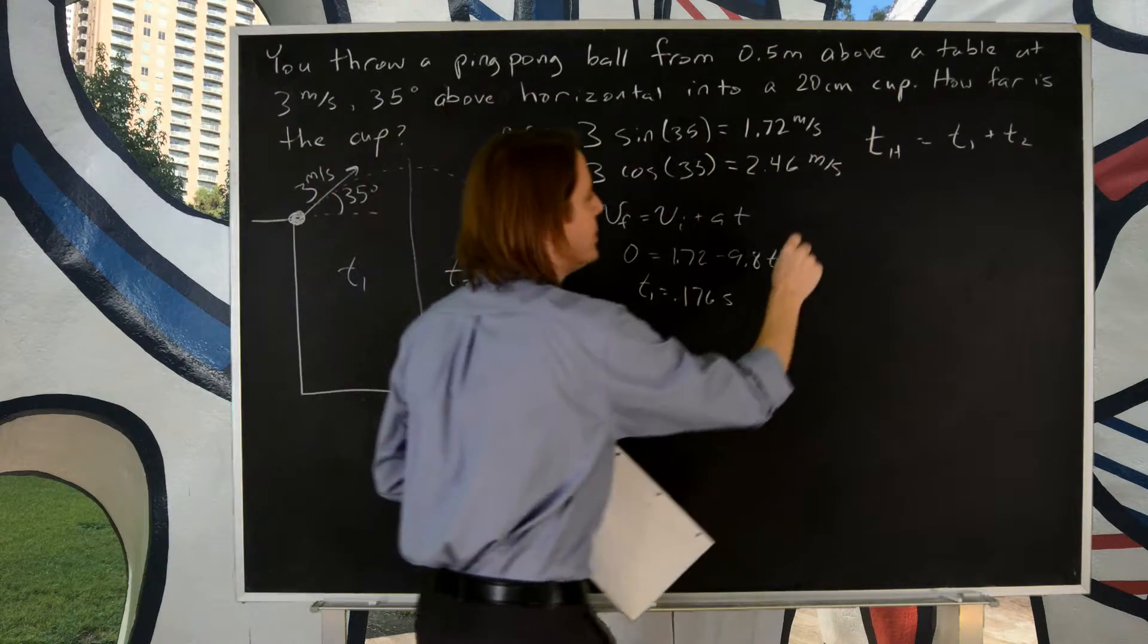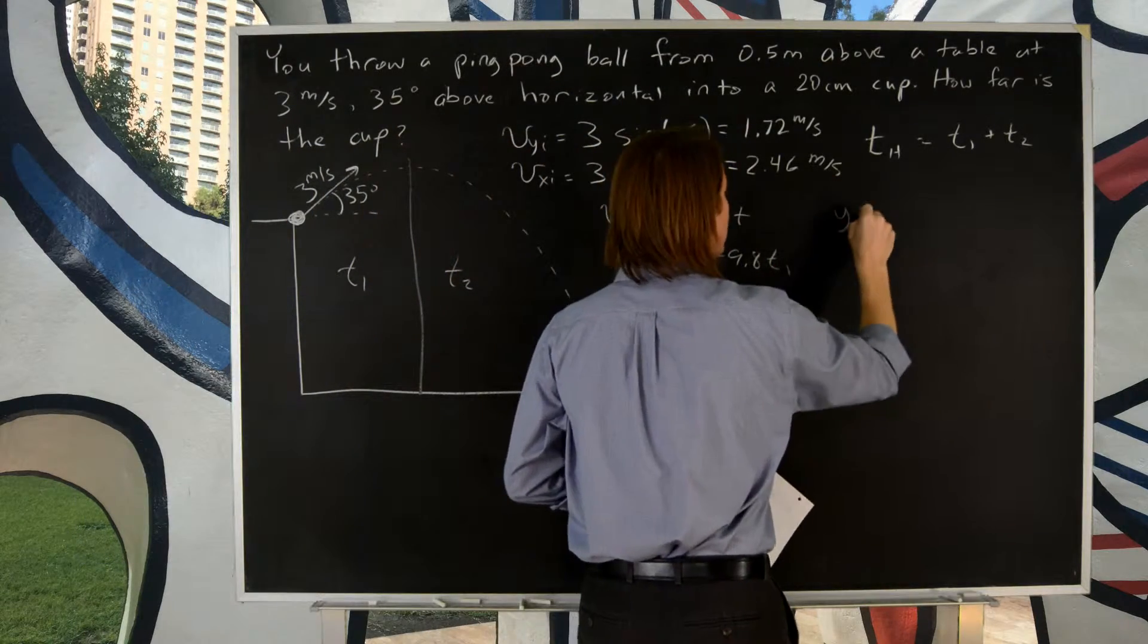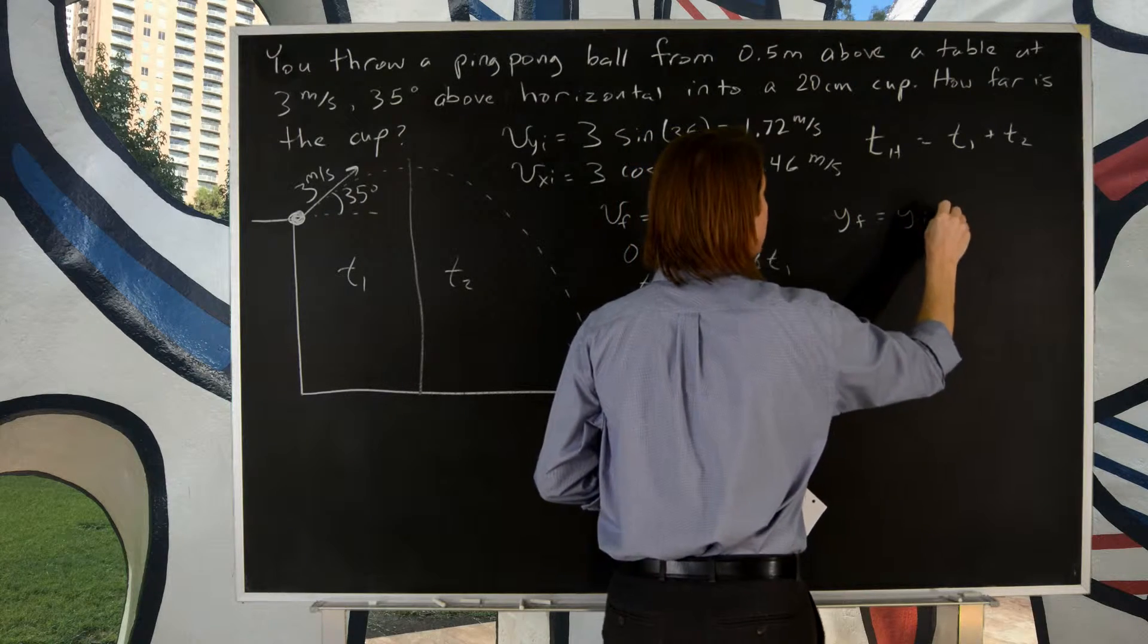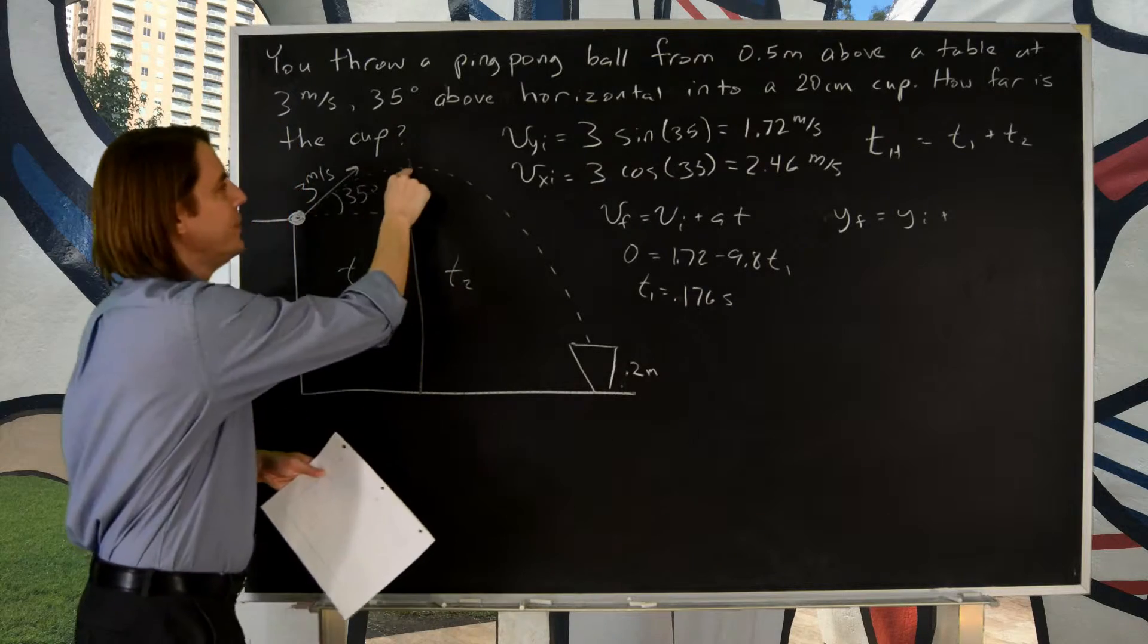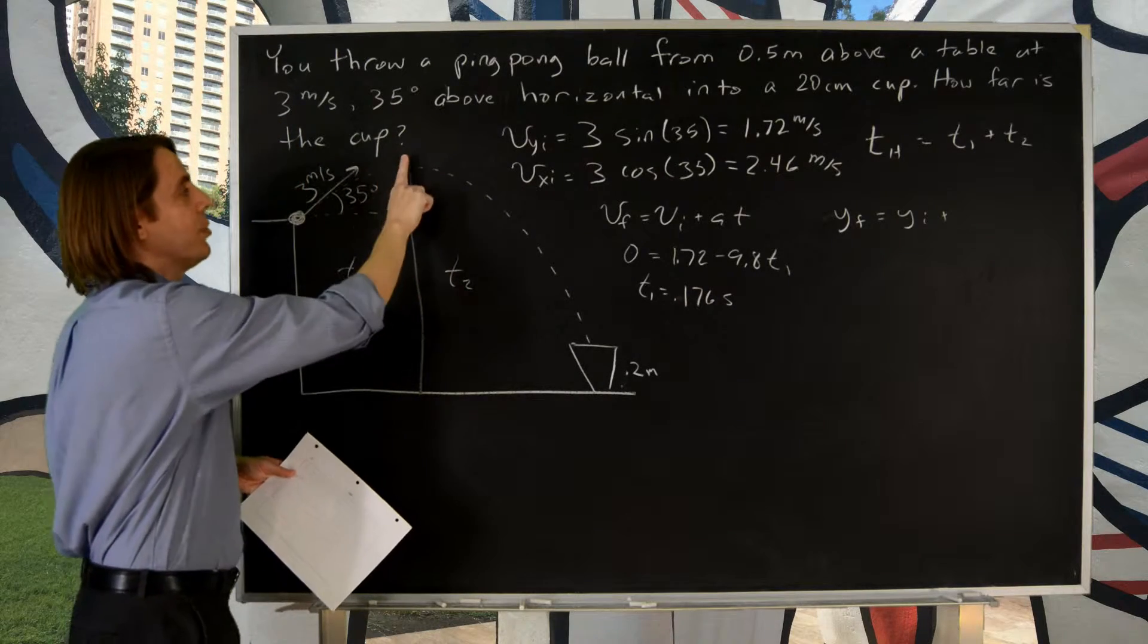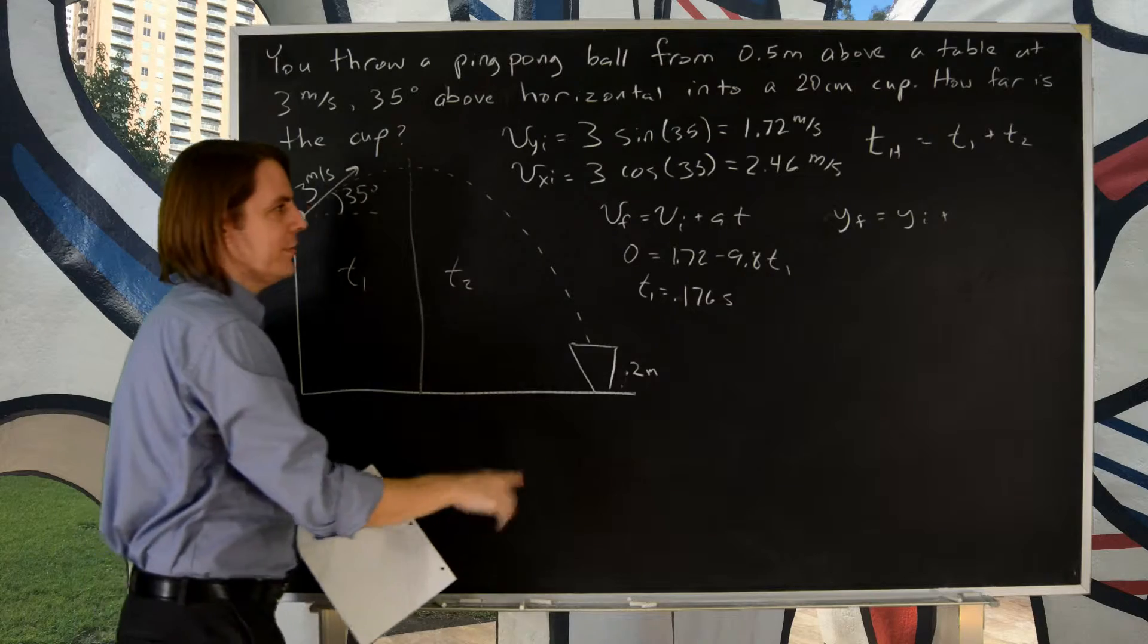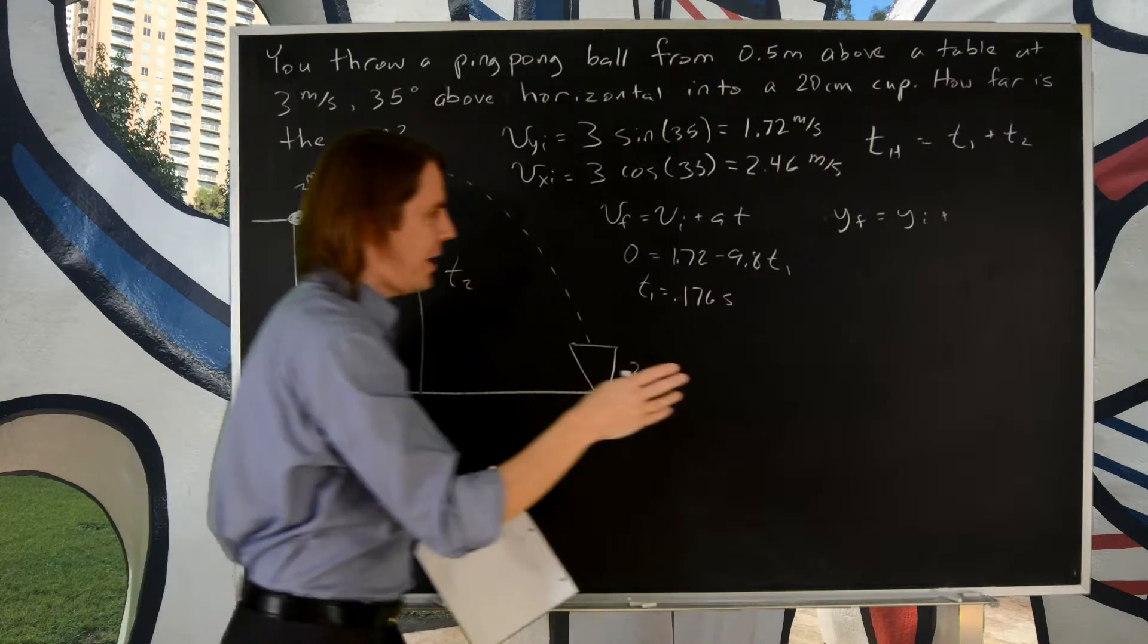v final, or sorry, y final, 0.2. Let's see. We're going to use y final equals y initial plus v, y initial T. But there is no v, y initial. For this leg, it's gone where the v, y has gone to zero. So it's just dropping. So that part's gone. Plus 1.5 AT squared.